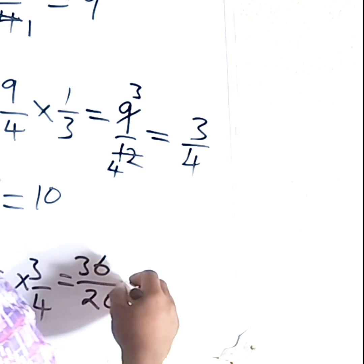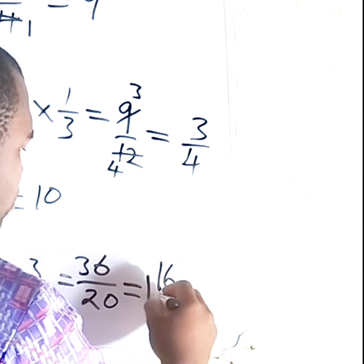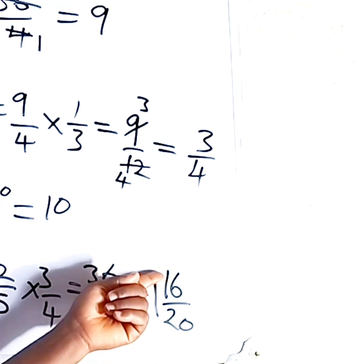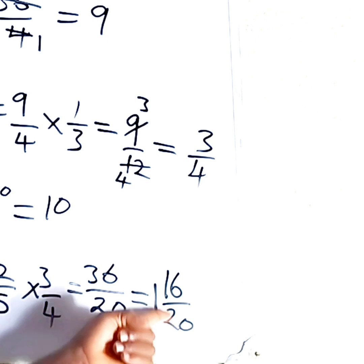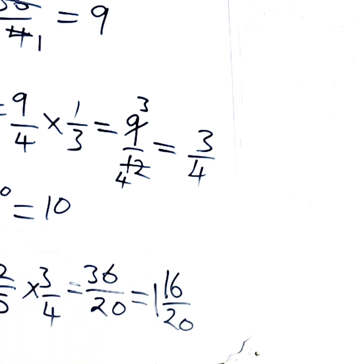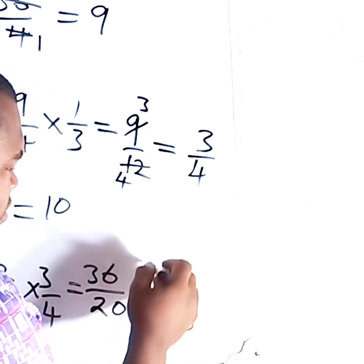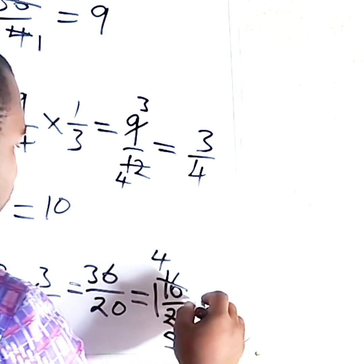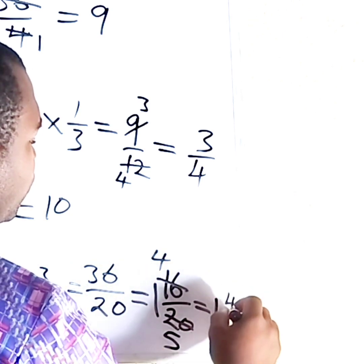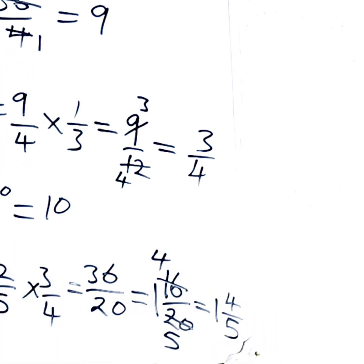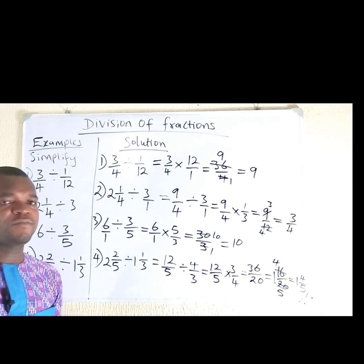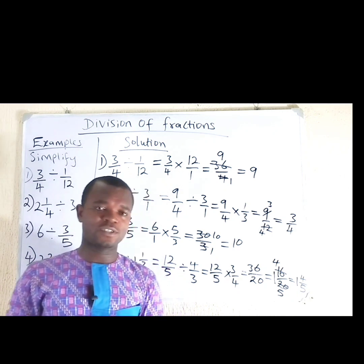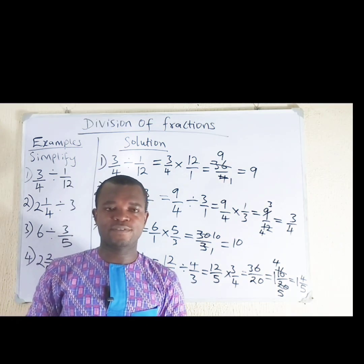So the answer will be 1 whole number 16 over 20. But 4 can divide both 16 and 20, so we reduce 16 over 20 to lower terms. 4 divides 16 gives you 4, and 4 divides 20 gives you 5. So the final answer is 1 whole number 4 over 5. When you have fractions, you can easily divide a fraction by another fraction. I hope you enjoyed this video. Please share and like this video. Thanks for watching.